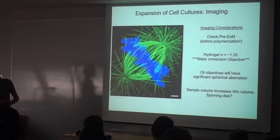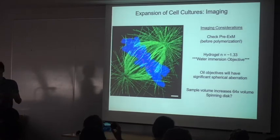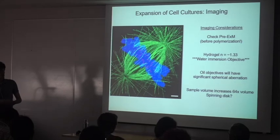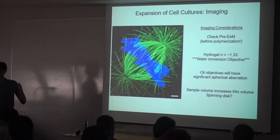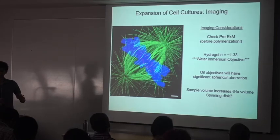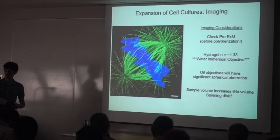Just really quick imaging considerations. Do not image the sample within the gel before you've expanded it. Any time there may be free radicals around, you can damage the sample. It's always a good idea to check before you've polymerized to make sure that your stain is good. Expansion relies on having a pure aqueous gel, so you're going to want to be using water immersion objectives if possible. You're going to lose 50% of your light intensity above 10 microns if you're trying to use an oil objective into an aqueous sample. Your sample is going to blow up a lot. Thank you.